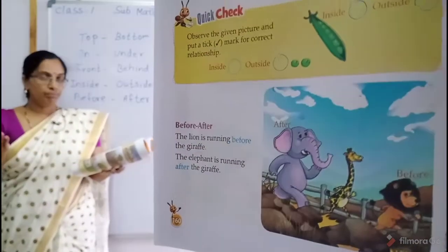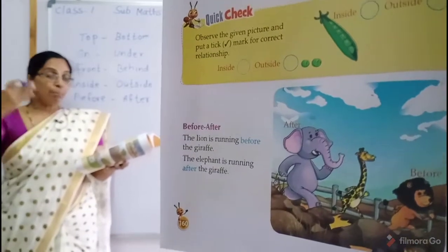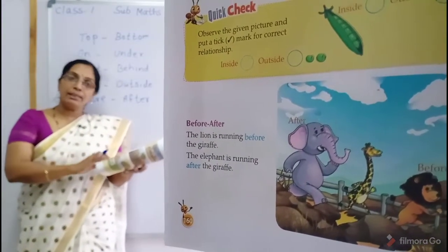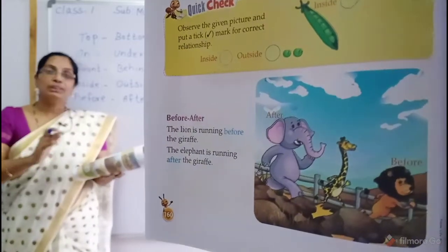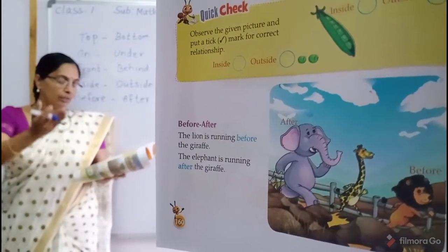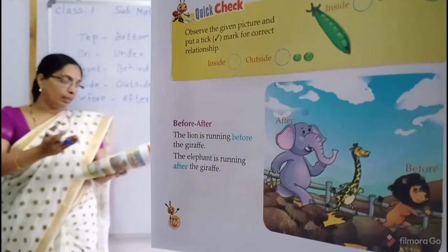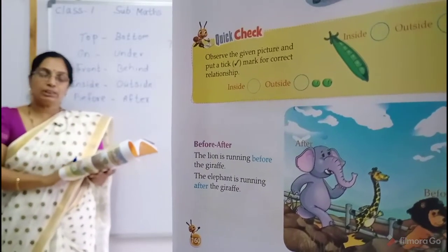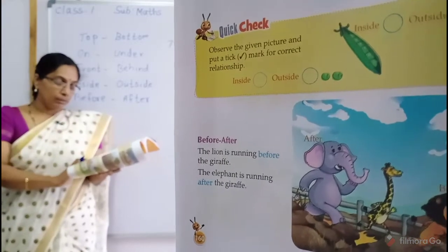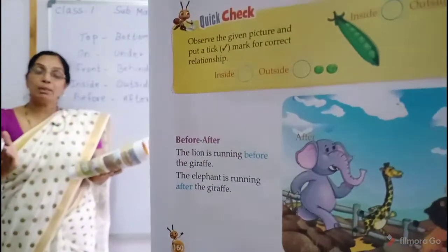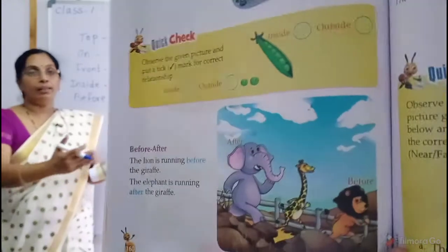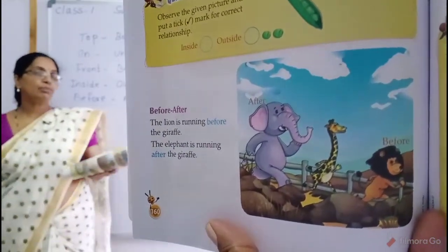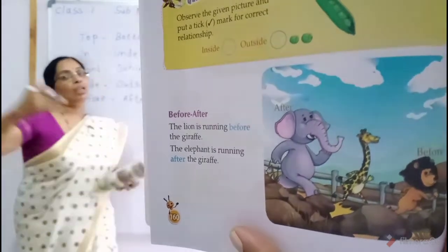In front, lion is before the giraffe. An elephant is after the giraffe. Giraffe is there — the before animal is lion, the after animal is elephant. So, before and after.